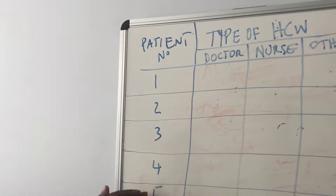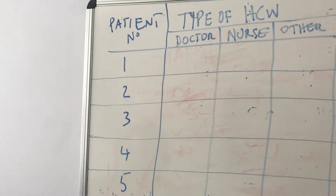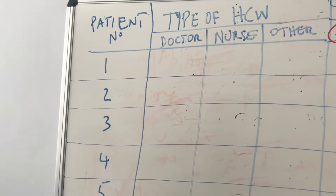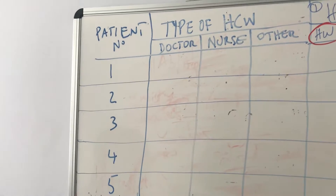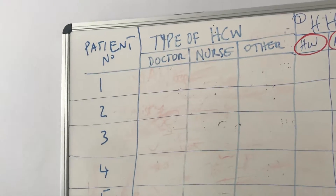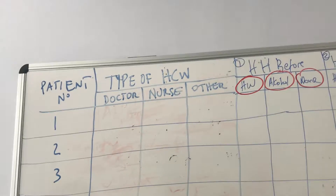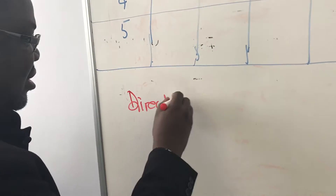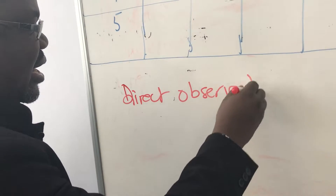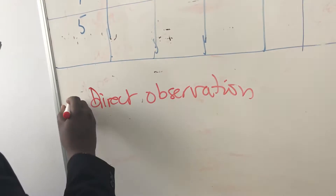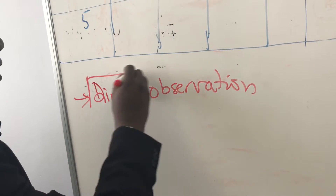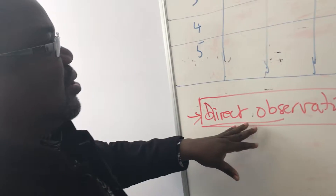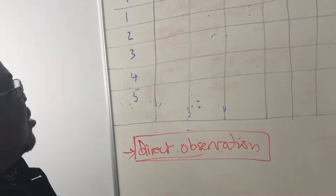Here we have our ward of five patients and we have different healthcare workers. Now let's say that you start your direct observation, because the method that we are using to measure hand hygiene here is called direct observation. There are other methods as well, but this one is considered by the WHO as a golden standard method to measure hand hygiene.